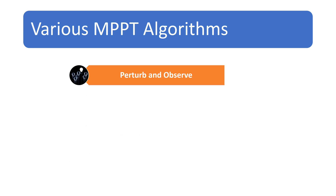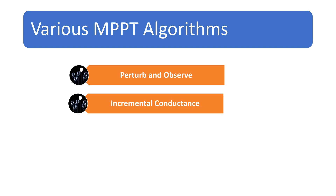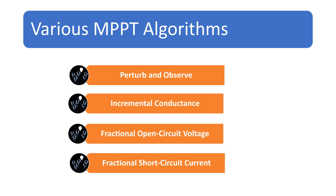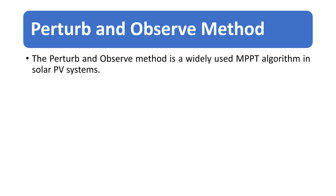There are several maximum power point tracking algorithms used in solar PV systems to optimize energy production by tracking the maximum power point of the solar panel. Here are a few MPPT algorithms: perturb and observe, incremental conductance, fractional open circuit voltage, and fractional short circuit current.